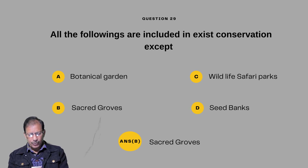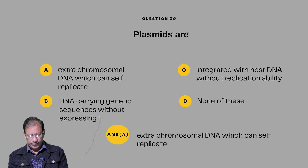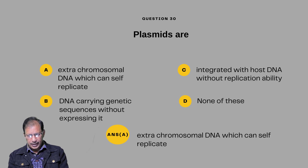Question number twenty-nine: All of the following are included in ex-situ conservation except — botanical garden, sacred groves, wildlife safari park, or seed bank. Answer will be sacred groves. Question number thirty: Plasmids are — A: extra chromosomal DNA which can self-replicate; B: DNA carrying genetic sequence without expressing it; C: integrated with host DNA without replication ability; D: none of these. Answer will be A — extra chromosomal DNA which can self-replicate.